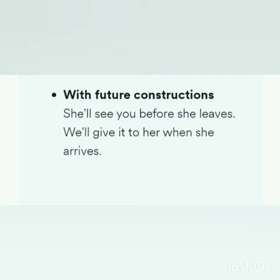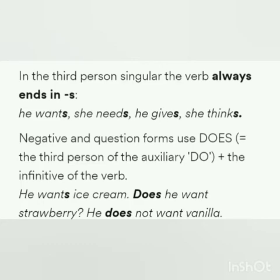In the third person singular, the verb always ends in -s. For example: he wants, she needs, he gives, she thinks. Negative and question forms use 'does' — the third person of the auxiliary 'do' — plus the infinitive of the verb. For example: 'he wants ice cream,' 'does he want strawberry?' 'he does not want vanilla.'